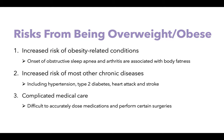Three risks of being overweight or obese. Number one: increased risk of obesity-related conditions such as obstructive sleep apnea and arthritis. Number two: increased risk of most chronic diseases — things like hypertension, type 2 diabetes, heart attack, and stroke occur at a much higher rate when somebody is overweight or obese. Number three: complicated medical care. When there's an increased amount of adipose tissue or fat tissue, as well as skeletal muscle, it becomes more difficult to accurately dose medications and perform certain surgeries.